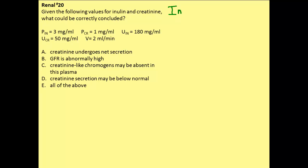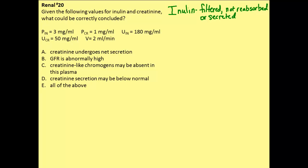Inulin is a carbohydrate that must be injected into the body to do these studies. The reason it's considered the gold standard for GFR measurement is because it is filtered at the glomerulus, but it's not reabsorbed or secreted. For those reasons, it's a very good indicator of GFR that we can always rely on.